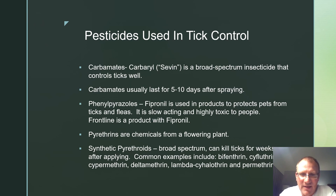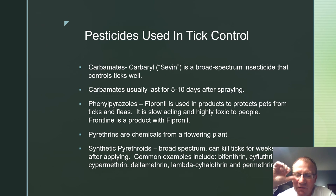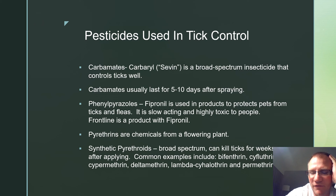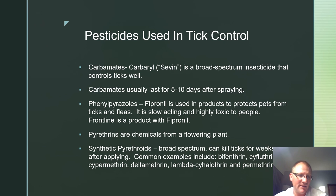Carbaryl (Sevin dust) is a broad-spectrum insecticide that works well, though it usually lasts only five to ten days after spraying. Fipronil (a phenylpyrazole) is used in products to control and protect pets from ticks and fleas; it is slow-acting and highly toxic — Frontline is a product containing fipronil. Pyrethrins are chemicals derived from a flowering plant. Synthetic pyrethroids are broad-spectrum and can kill ticks for weeks after application. Examples include bifenthrin, cyfluthrin, cypermethrin, deltamethrin, lambda-cyhalothrin, and permethrin.